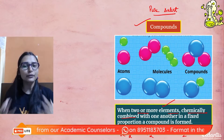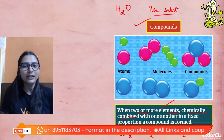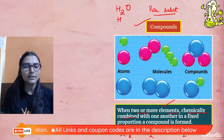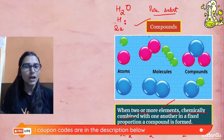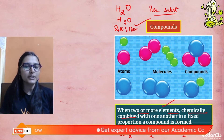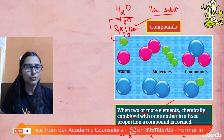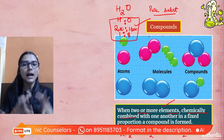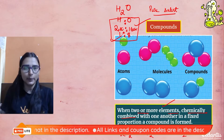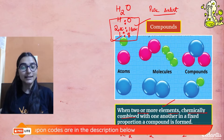In water, there are two hydrogen atoms — each with a mass of one unit, so two hydrogen atoms have a mass of two units. Oxygen has a mass of 16 units. So the ratio is 2:16, which simplifies to 1:8. This means hydrogen and oxygen are chemically combined in a mass ratio of 1:8 always — one part hydrogen to eight parts oxygen.